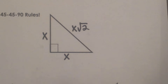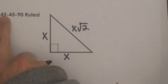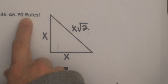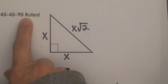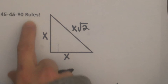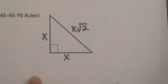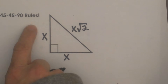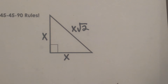Hi and welcome to Moo Moo Math. Today we are going to look at 45-45-90 rules for right triangles. These are shortcuts for the SAT and quick reminders on how to solve special right triangles 45-45-90.